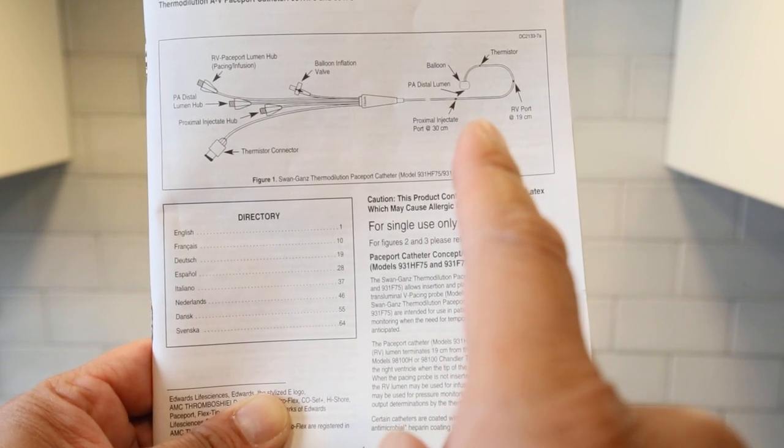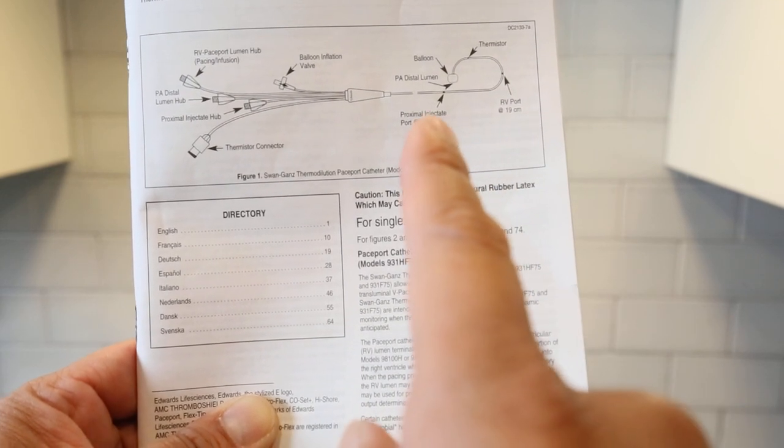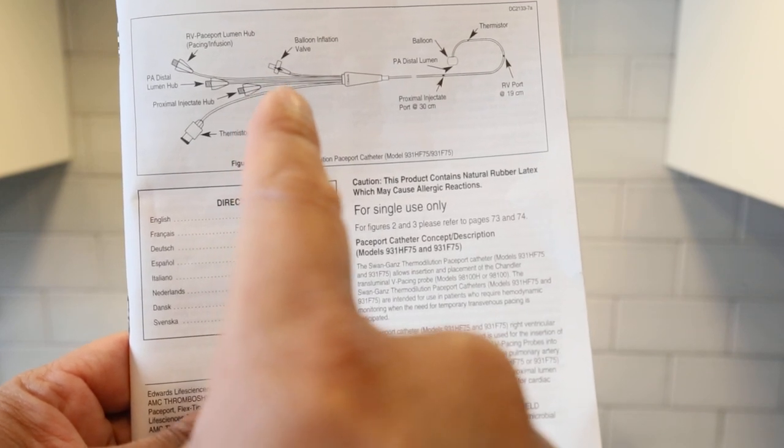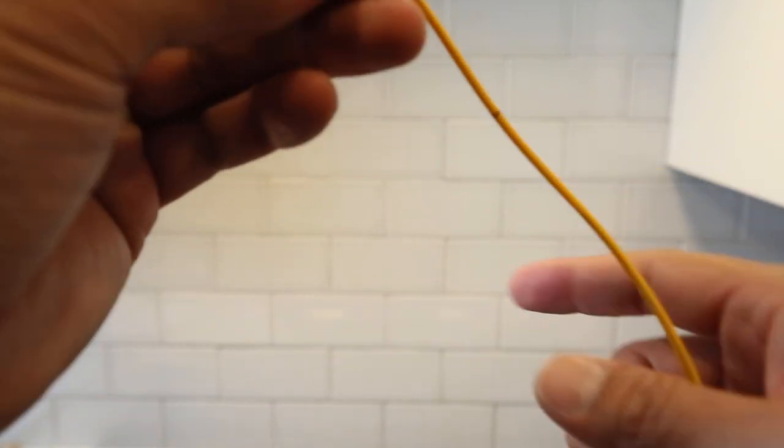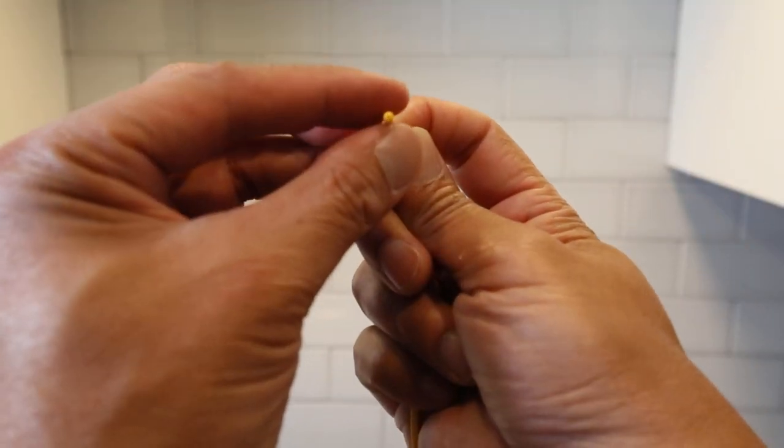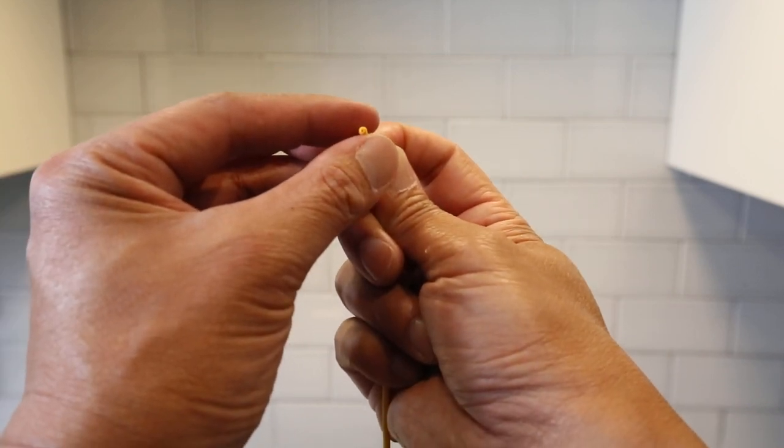Okay, so the distal is at the very end. The RV port and the proximal. Let me check. The proximal goes with the shortest one, so it's closest to you. And you got your distal most distal port, which is that hole right there.